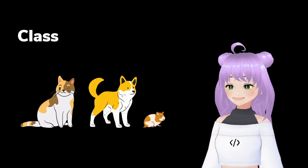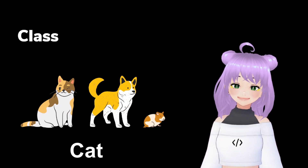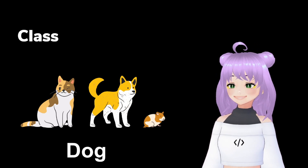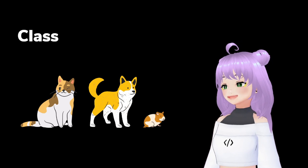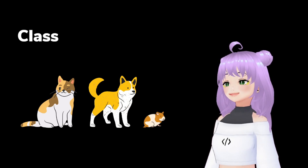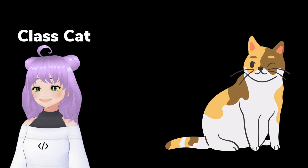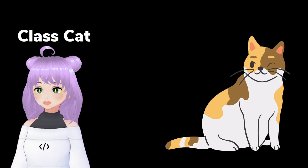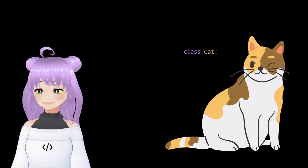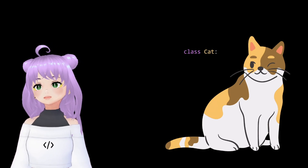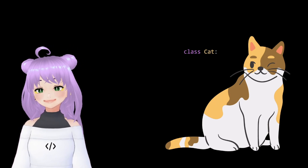As you can see, we can create different types of templates. For example, we can have a class cat, a class dog, or a class hamster. Since we want to make a cat language translator, let's focus on the class cat. Creating new classes in Python is extremely easy. The only thing that you have to do is write class followed by the name of your new class or template — in this case, cat.